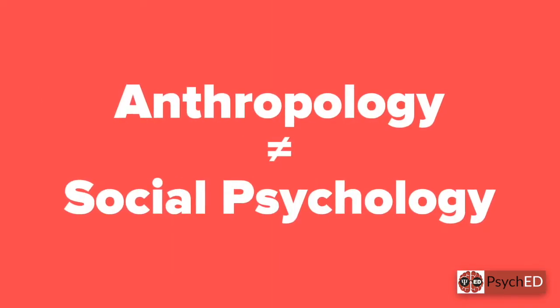Likewise, anthropology and social psychology are not the same. Anthropology is the study of humanity that focuses on culture, behavior, and biology, and the effect of changing time on them. Whereas social psychology is more interested in the behavior, cognition, and emotion of people in groups.